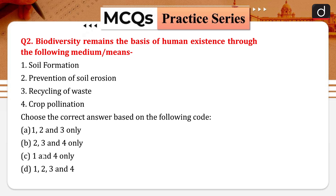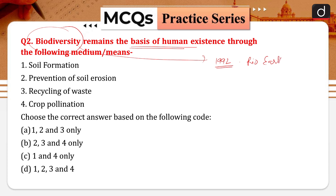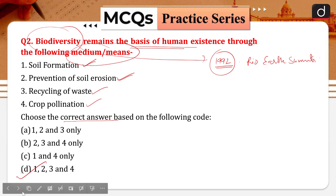Question number two: biodiversity remains the basic of human existence through the following mediums. Biodiversity includes all kinds of species or different organisms from all sources in your ecosystem. The options are soil formation, prevention of soil erosion, cycling and recycling of waste, and crop pollination. All of these are mediums through which biodiversity supports human existence, so option D — all four — would be the right answer.